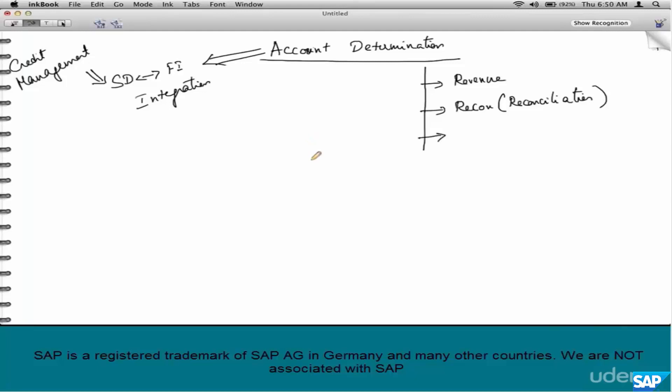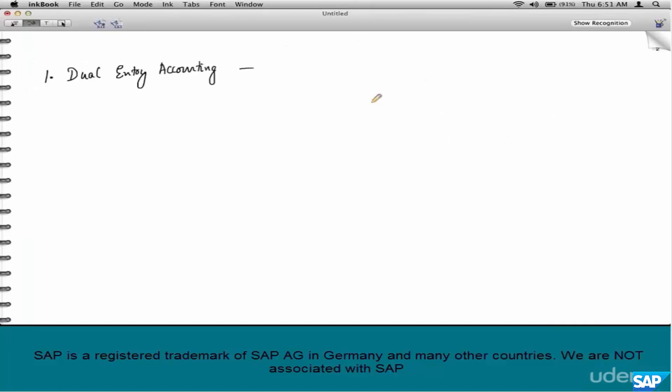Before we understand any of these terms, we have to first understand dual entry accounting. This is the standard accounting practice for all big companies. For every transaction that affects accounts, there will be a credit and a debit, a set of credits and debits in fact, and the amount of credit and the total amount of debit will be equal. Credit is posted as negative and debit is posted as positive.